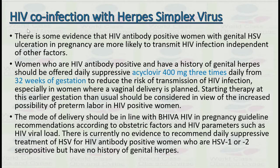There is some evidence that HIV antibody positive women with genital herpes simplex virus ulceration in pregnancy are more likely to transmit HIV infection, independent of other factors. Women who are HIV antibody positive and have a history of genital herpes should be offered daily suppressive acyclovir of 400 mg three times daily from 32 weeks of gestation, to reduce the risk of transmission of HIV infection, especially in women where vaginal delivery is planned.